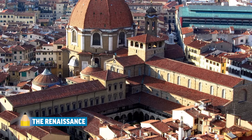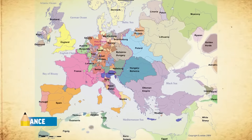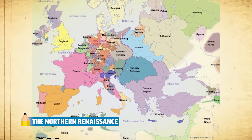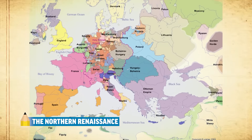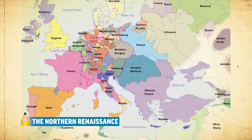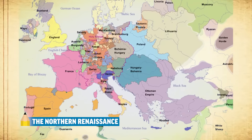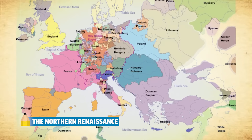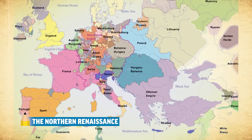Wealthy patrons like the Medici family in Italy begin commissioning beautiful pieces of art to glorify and bedazzle their city. As this new humanist thought travels north throughout Europe, it changes. The Northern Renaissance is characterized more so by Christianity and Christian humanism when compared to the Italian Renaissance.